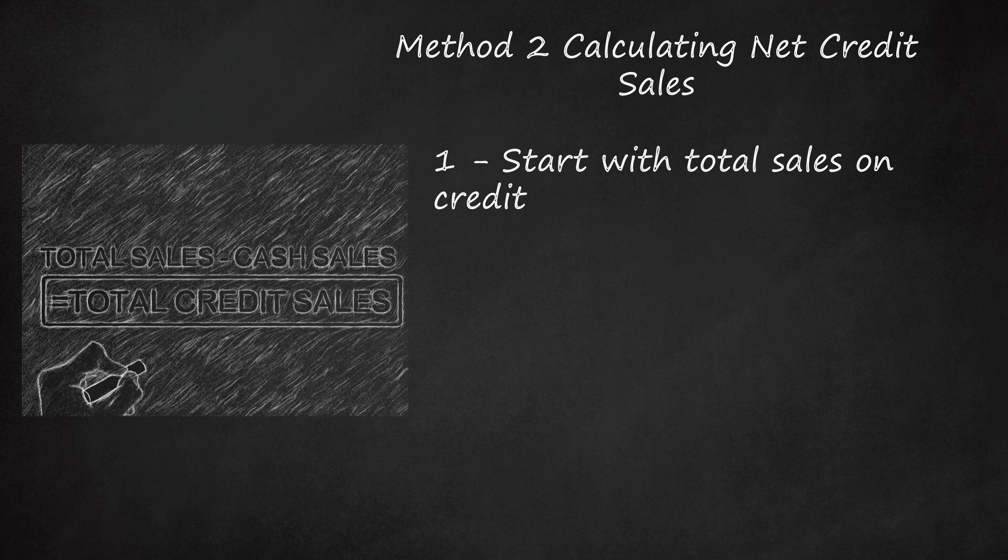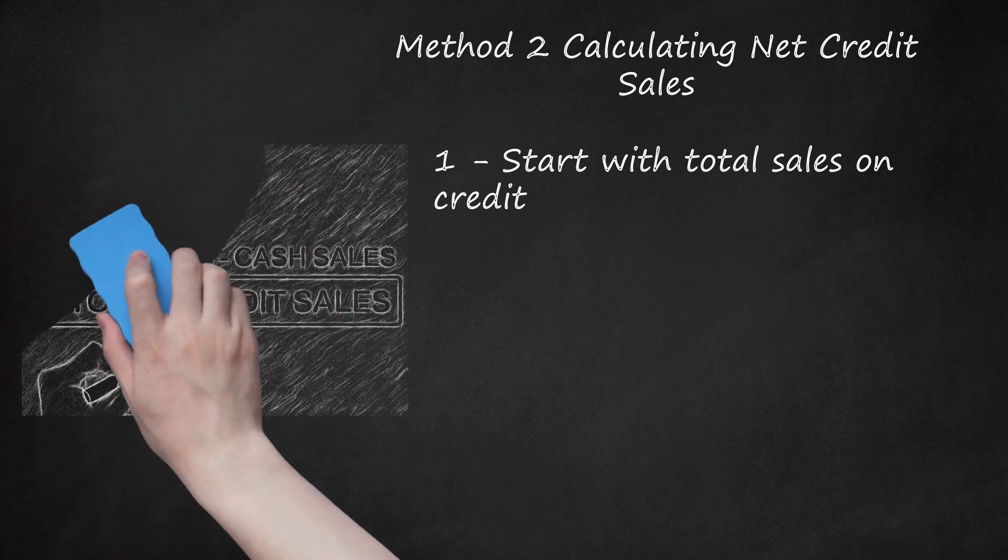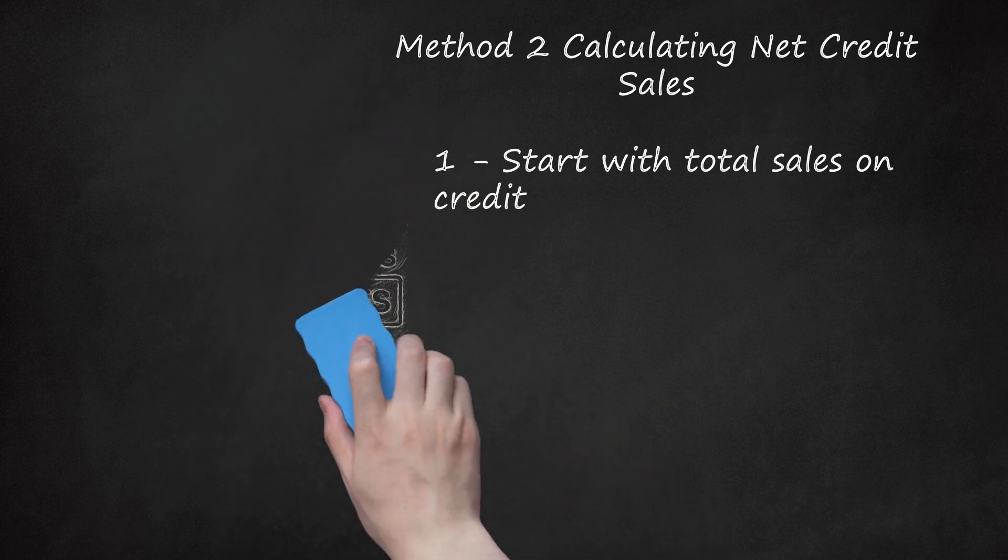To find net credit sales, start with total sales on credit for a given period. Remember to reduce total sales by cash sales to get total credit sales. For example, a company might have $200,000 in credit sales over the course of a year. Start with this value to calculate net credit sales. Total sales on credit can be found using the methods from part one of this article titled Calculating Credit Sales.